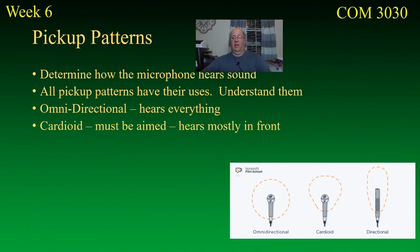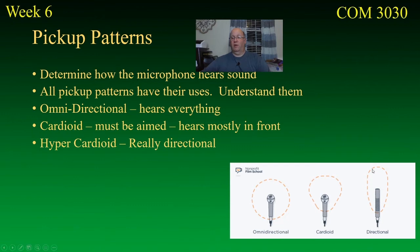A cardioid microphone is a pointable microphone, but not heavily so. It's going to pick up most of its sound from in front of it, but it will pick up some sound from the sides and a little bit from behind. It's got a heart shape to the pickup pattern. The hypercardioid or directional microphone picks up almost everything from in front of it — it's pointable. If you're not pointing it at a source, it doesn't hear it. There's no such thing as a completely unidirectional microphone, but they get as close as a hypercardioid pickup pattern.